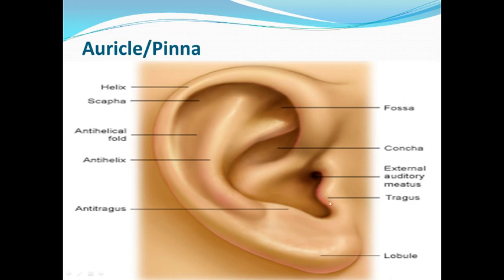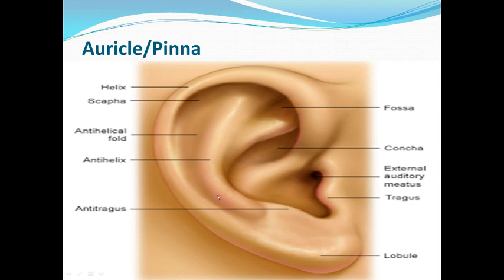You can see a conical projection just near the opening of the external auditory canal. This projection is known as the tragus, and just opposite to the tragus we have the anti-tragus. Similarly, we have the helix, and then another fold known as the anti-helical fold, the most prominent part of which is the anti-helix. The large depression on the pinna, the concha, directs sound waves towards the external auditory meatus.